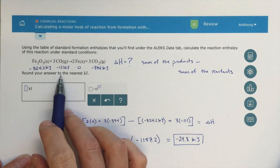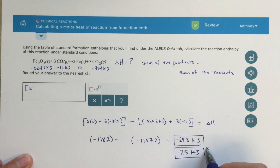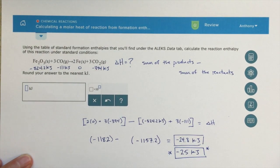So that's my answer. And then this says round your answer to the nearest kilojoule. So really I want to be putting in minus 25 kilojoules. So that's my final answer there. All right, hope that helps.